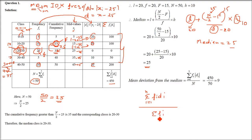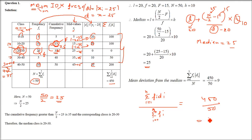Mean deviation from median = Σ(fi×Di) / Σfi = 450 / 50 = 9. So 9 is the mean deviation around the median. All similar median-based questions follow this same procedure.